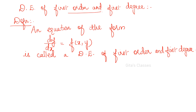In the previous class I explained order and degree clearly. If you want, you can go through that class. An equation of the form dy/dx — how many times is it differentiated? Only once, that is why it is first order. The power of dy/dx is also one, that is why it is called a first order, first degree differential equation. So dy/dx = f(x, y) is the general form.